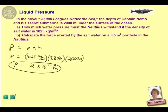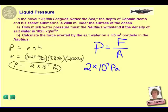The second part of this is to calculate the force exerted on a 0.85 square meter porthole. Remember that pressure can also be defined as a ratio of force per area. So we have a pressure value calculated at 2 times 10 to the seventh pascals. We're looking for the force value, and they've given us an area.